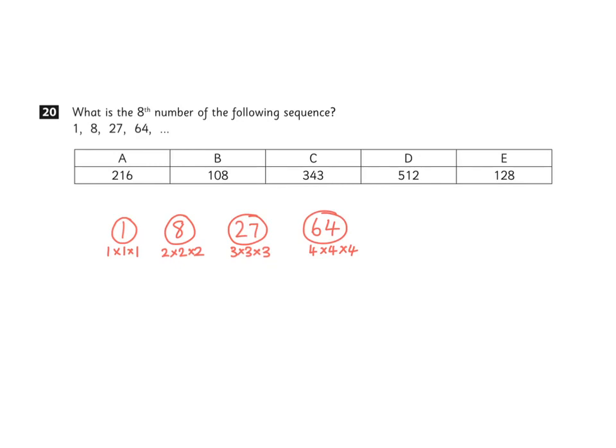We're asked in this question to find the 8th number in this following sequence. If the first number is 1 cubed, the second number is 2 cubed and so on, then we know that the 8th term in the sequence will be 8 cubed: 8 times 8 times 8.